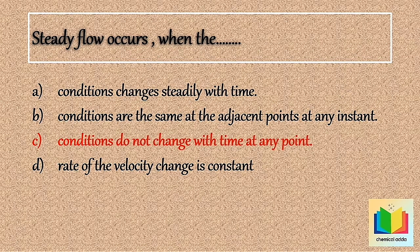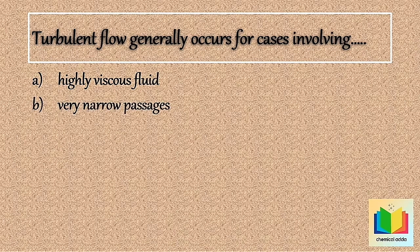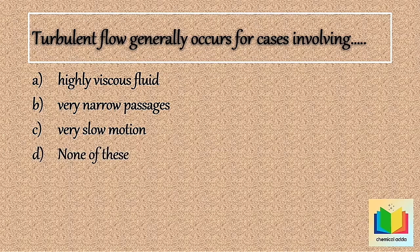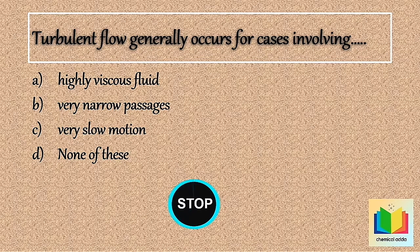Next question: Turbulent flow generally occurs for cases involving — Option A: highly viscous fluid. Option B: very narrow passages. Option C: very slow motion. Option D: none of these. Your time starts now... Stop. The answer is Option D: none of these.